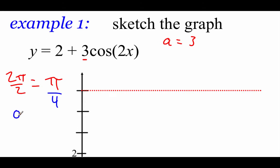Our graph starts at x = 0. Plugging in: 2 times 0 is 0, cosine of 0 is 1, times 3 is 3, plus 2 gives us 5. So at x = 0 we are up at 5. Our important points are π/4 apart.